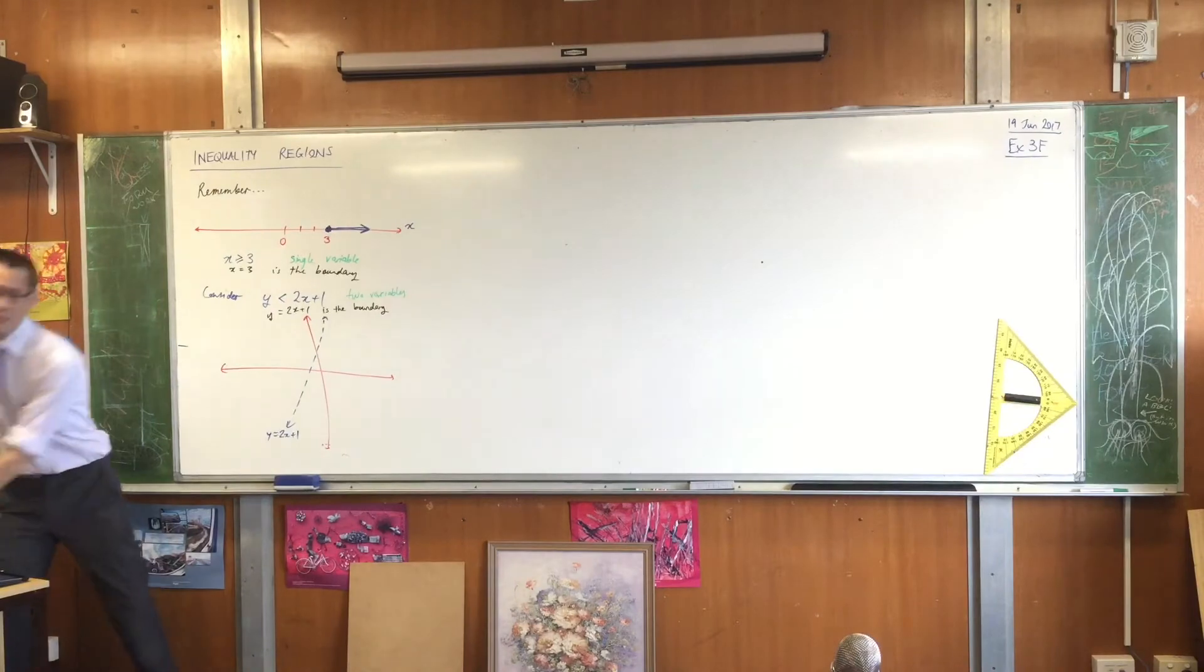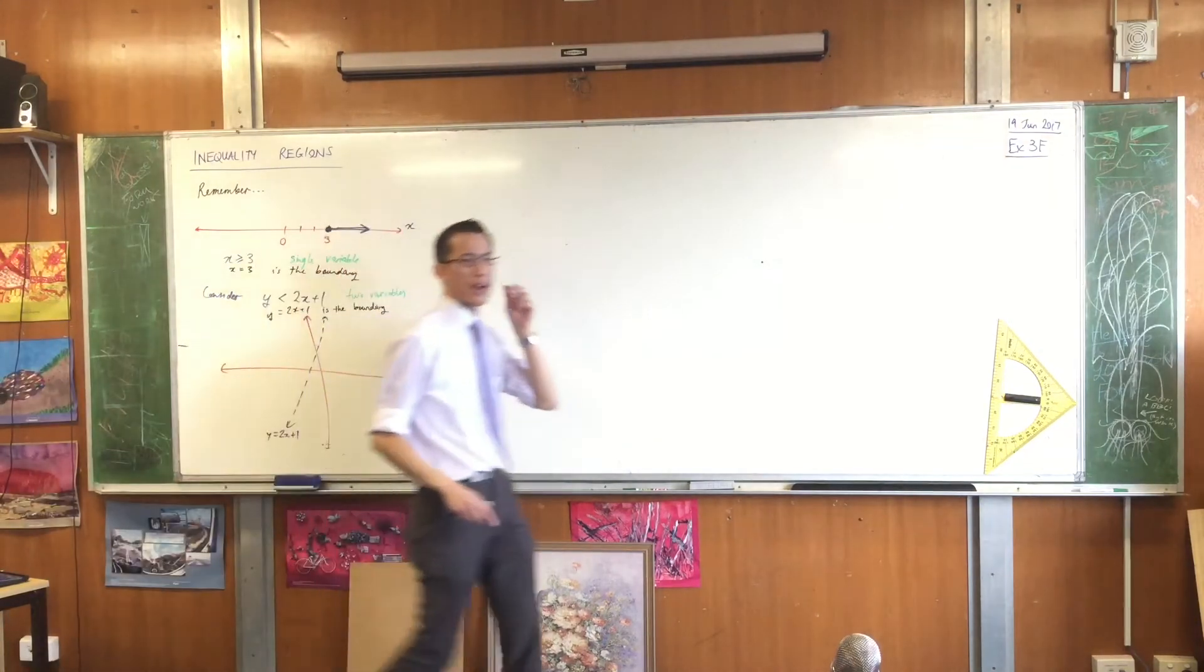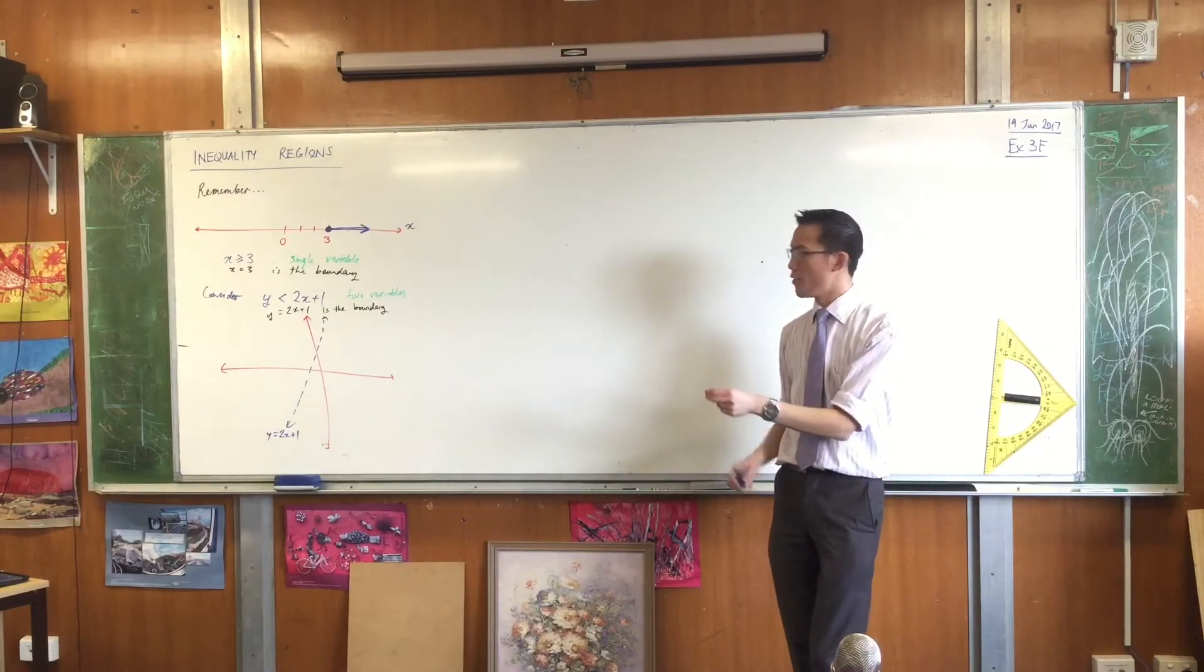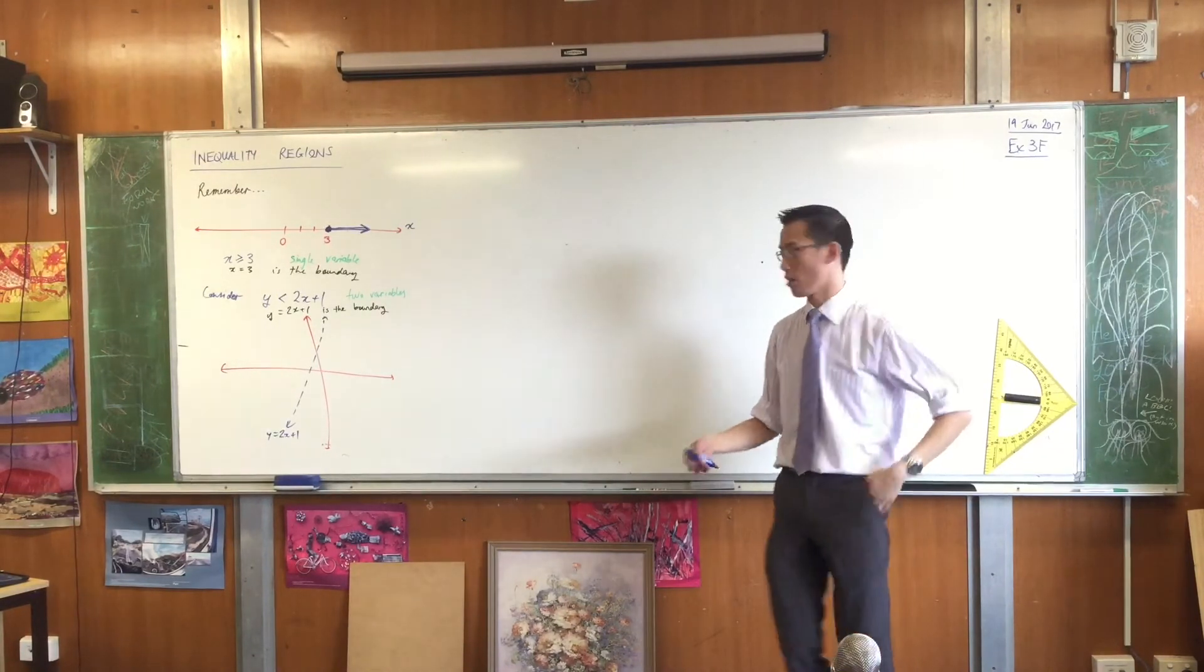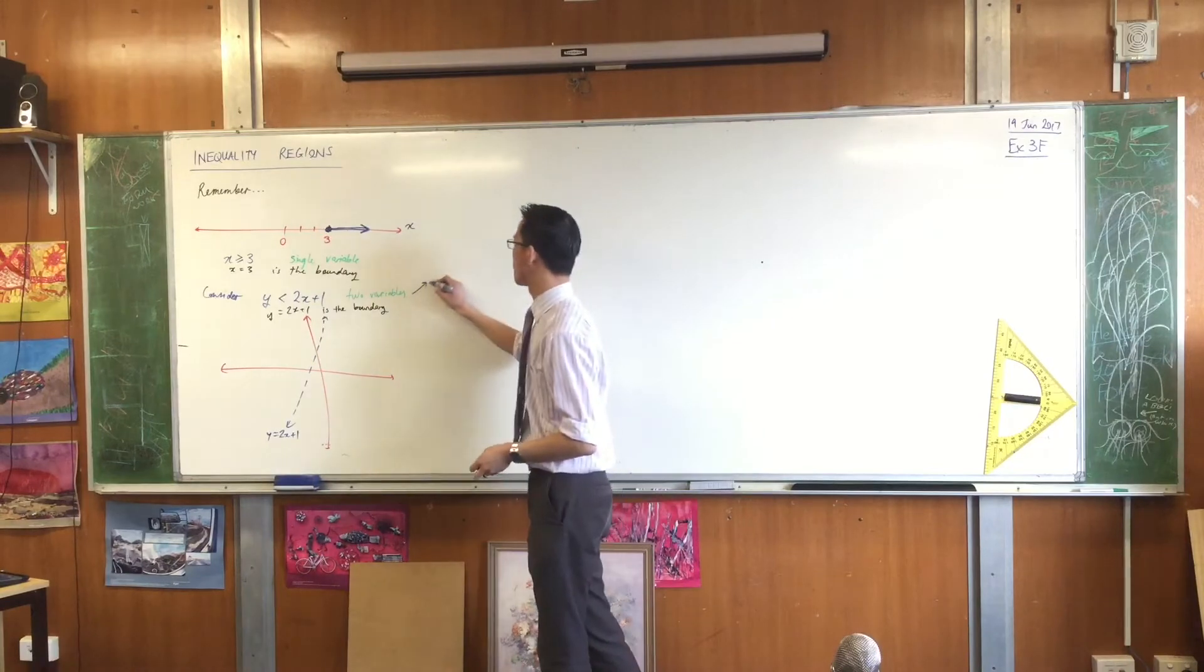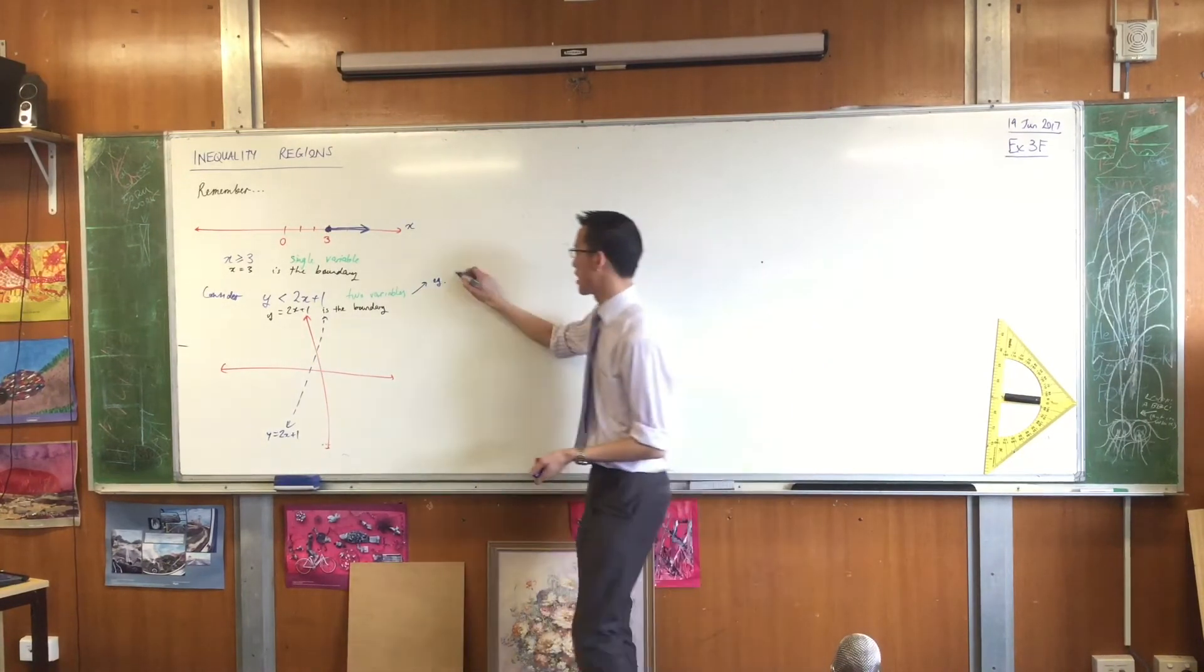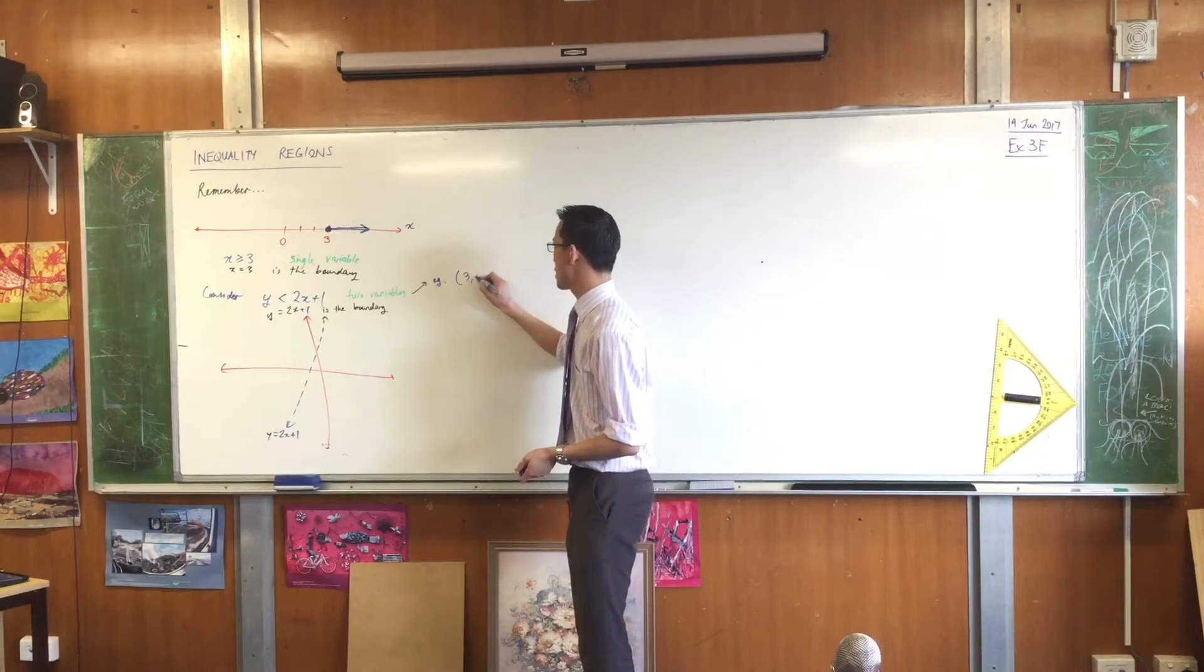Now think about this. There's an x and there's a y. So that means you need an x value and a y value for which this statement is either true or it's false. So, for example, think of a pair of coordinates. Think of something like, say, 3, 4.